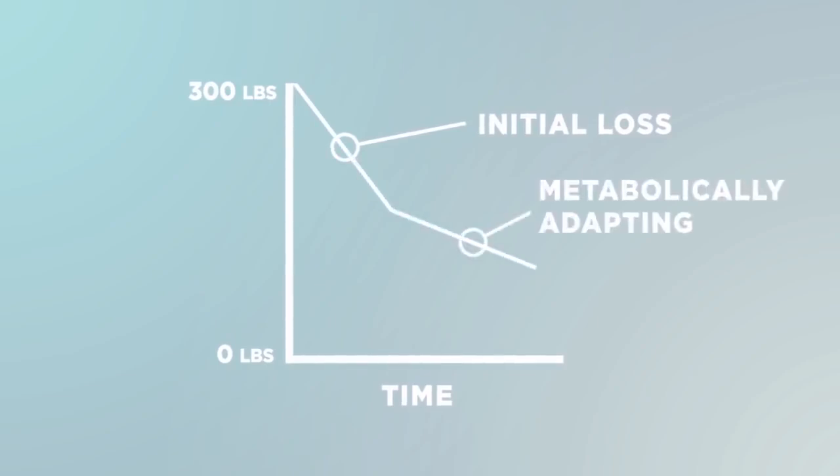You start to metabolically adapt to your new diet. And so you're never going to lose weight at one constant rate. It's always going to curve from one steady state down to another.